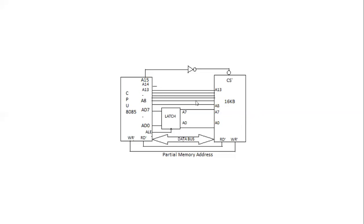When you want to write something into memory, you should know where you want to write, because there are 2 power 16 individual address locations. First you have to place the address on the address line. Once the address is stabilized, ALE is made high, indicating that the data present on A0 to A7 is the lower order of the address. Then the write signal is enabled, and whatever data is placed on the bus will be written into the respective address.